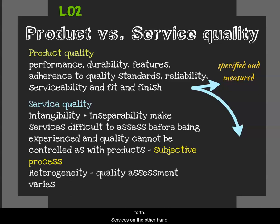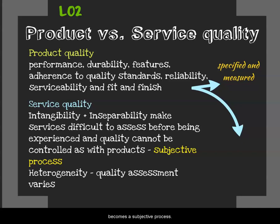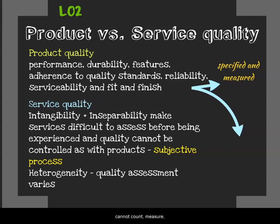Services, on the other hand, are intangible — customers cannot feel, see, or taste them prior to purchasing. This makes an objective assessment of quality virtually impossible, and defining quality in the service sector is therefore difficult. Assessment of quality becomes a subjective process that depends on what the customer perceives. The intangibility and inseparability of services make it hard to provide and maintain high quality standards because marketers cannot count, measure, or control the standard of service before delivery. Because services are intangible and heterogeneous, every customer's service experience and quality assessment will vary every time.